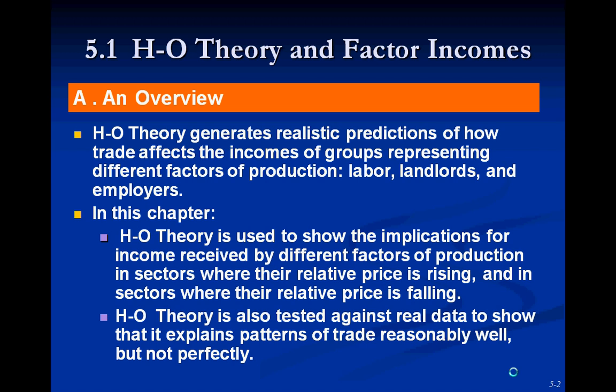The Heckscher-Olin theory was developed by two economists. Heckscher started the theory, but he unfortunately died, and Olin, his student and successor, finished it — thus the name Heckscher-Olin theory in memory of both of them. This theory is much better than Adam Smith's and Ricardo's theory of trade: the comparative and absolute advantage.